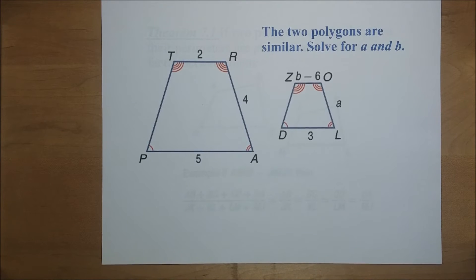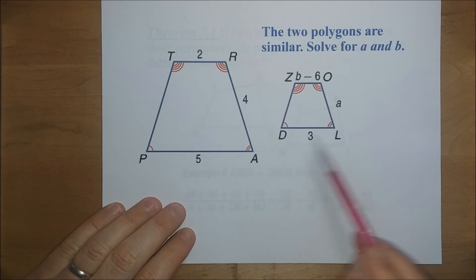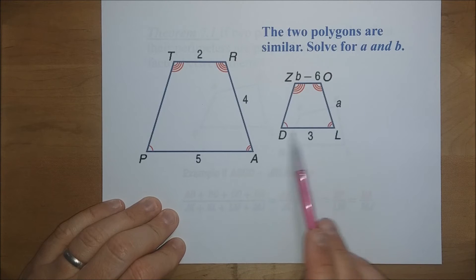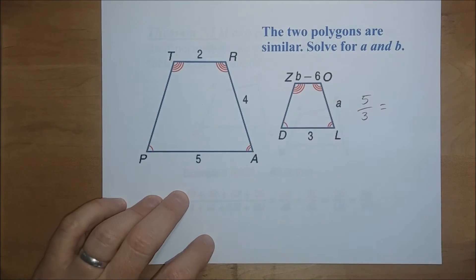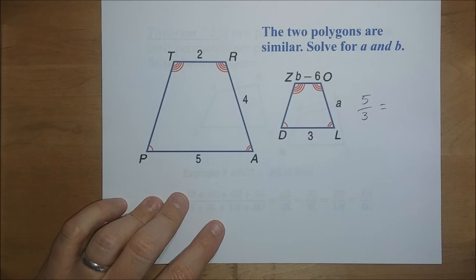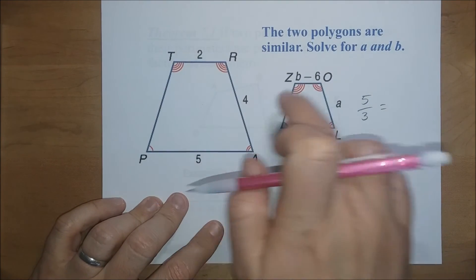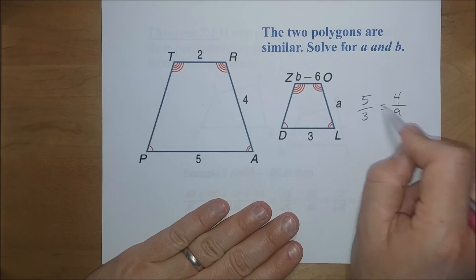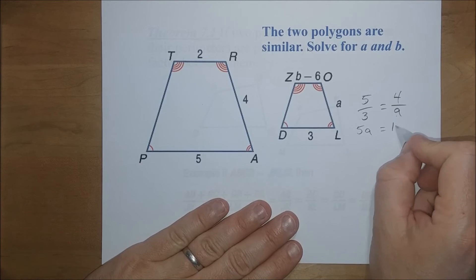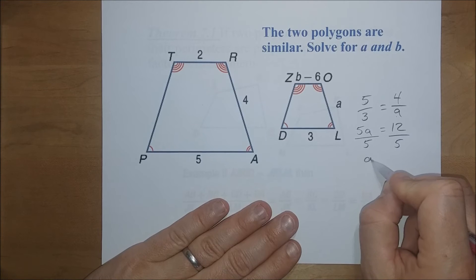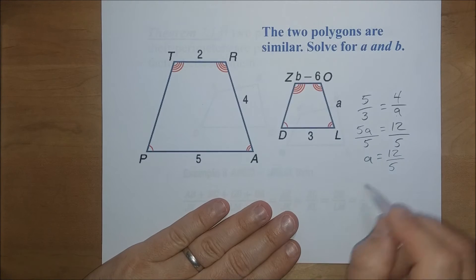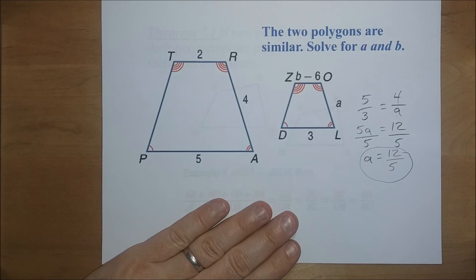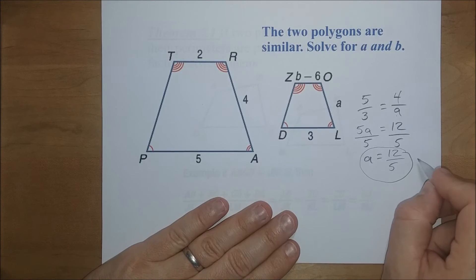For two more similar polygons, we solve for a and b. The scale factor is 5 to 3 from the corresponding marked sides. For a: 5 over 3 equals 4 over a. Cross multiplying: 5a equals 12, so a equals 12 fifths, which is also 2 and 2 fifths, or 2.4. There's nothing improper about leaving it as an improper fraction.